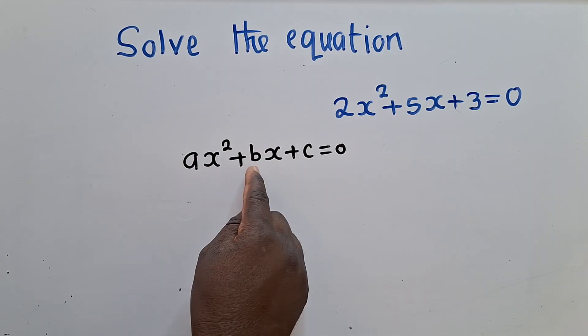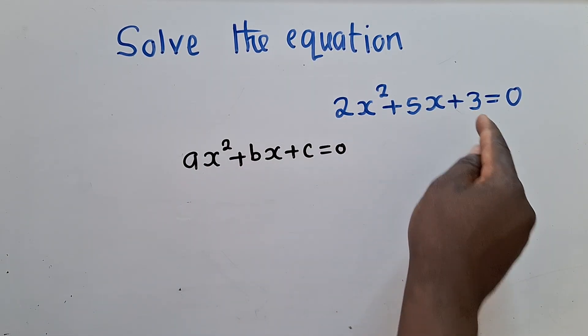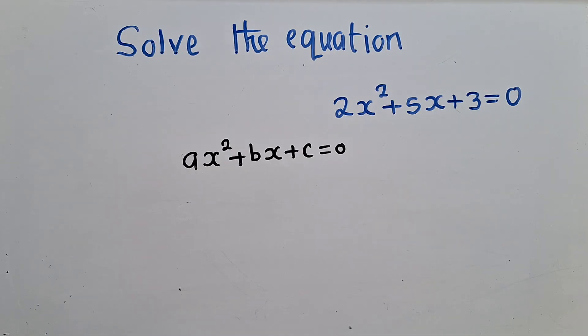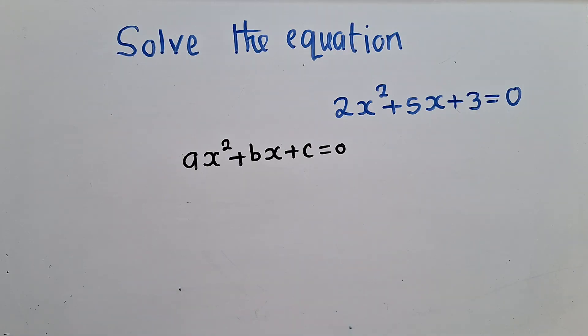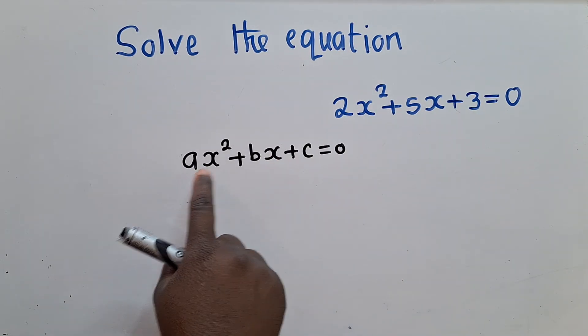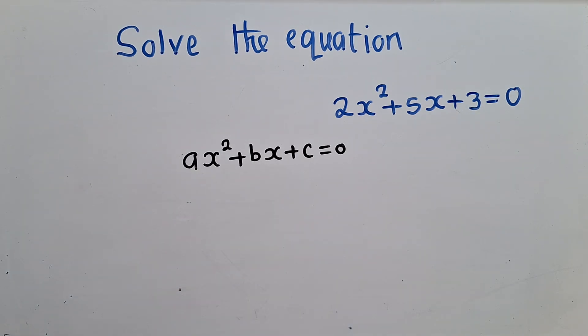But here I'm using A, B, C to represent the numbers in front. So please note that these are coefficients. And when we talk about coefficients, we're simply talking about actually these two. We're talking about numbers that are in front of some letters.